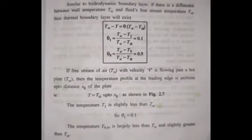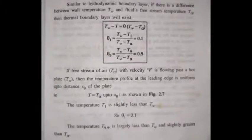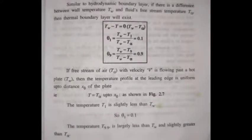If the free stream of air Tα with velocity V is flowing past a hot plate TW, then the temperature profile at the leading edge is uniform up to the distance x0. The temperature Tα is uniform and T equals Tα up to x0. The temperature T1 is slightly less than TW — that is, theta equals 0.1.